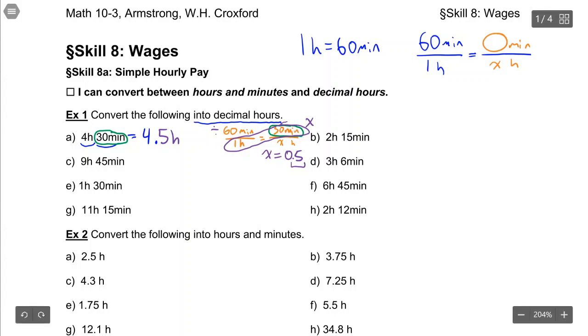So this one here, 15 minutes. The 2 hours is going to stay as 2 point, but the 15 minutes we're going to have to convert. So I'll set up a proportion. 60 minutes per 1 hour is 15 minutes per an unknown number of hours. So I'll cross multiply and divide. 15 times 1 divided by 60 gives me x is 0.25. And that is our 2.25 hours is our final answer.